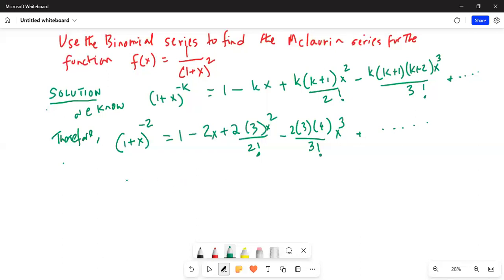Which is equal to 1 - 2x + 3x² - 4x³ + ...